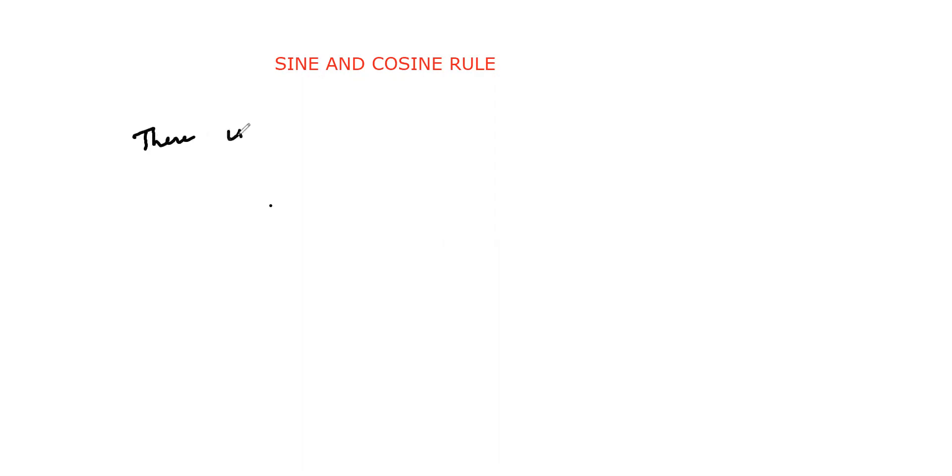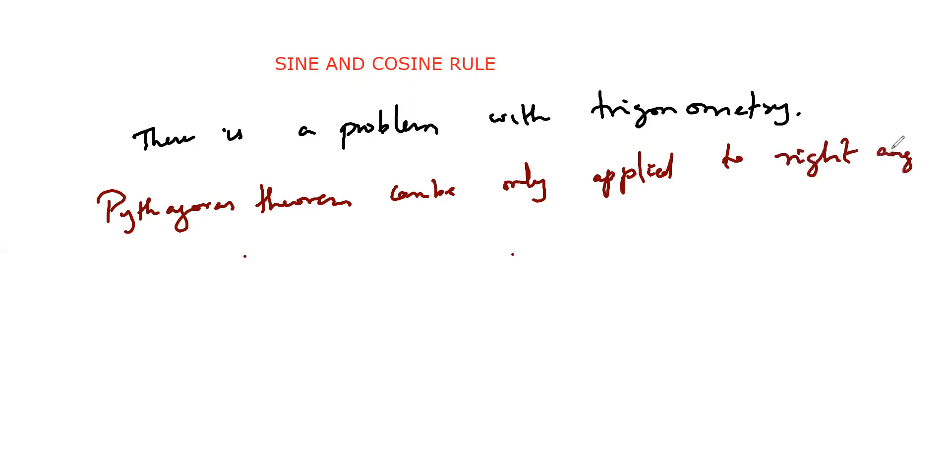But there is a big problem with trigonometry. Because we only apply Pythagoras theorem and Pythagoras theorem can be only applied to right angles. So what about any other triangle? This is the major drawback - only applied to right angle. They work only on right angles.